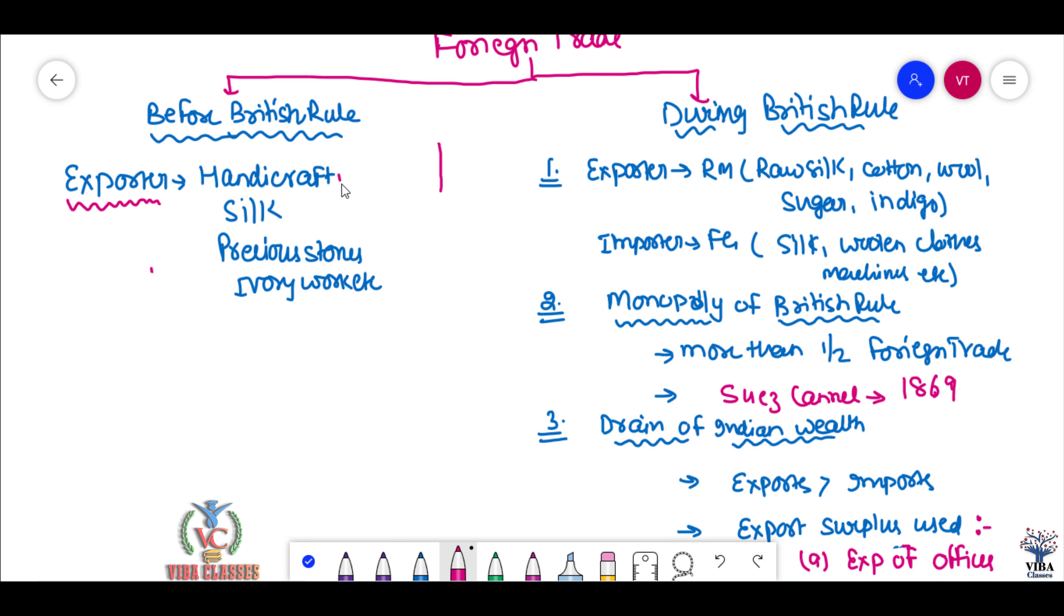So we were exporters. What kind of things? Handicraft industry is very well-known. We have already told you about it. Silk is very valuable. We are also very valuable. That is our country. Ivory work. There are some things that were in demand from foreign countries to our country. And we have exported to foreign countries. So it was not bad.